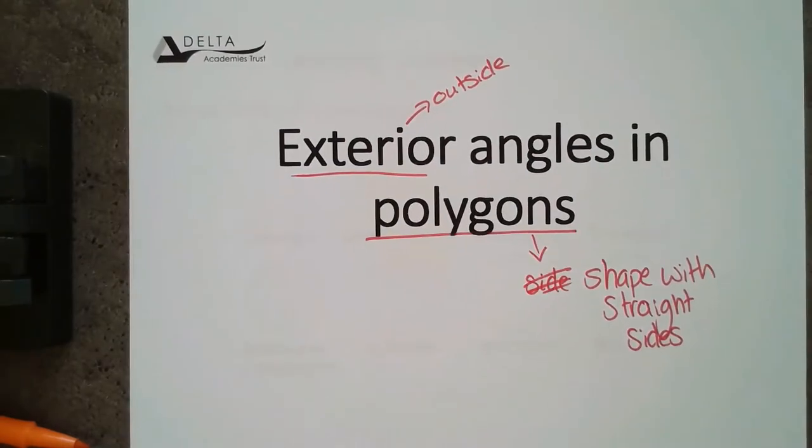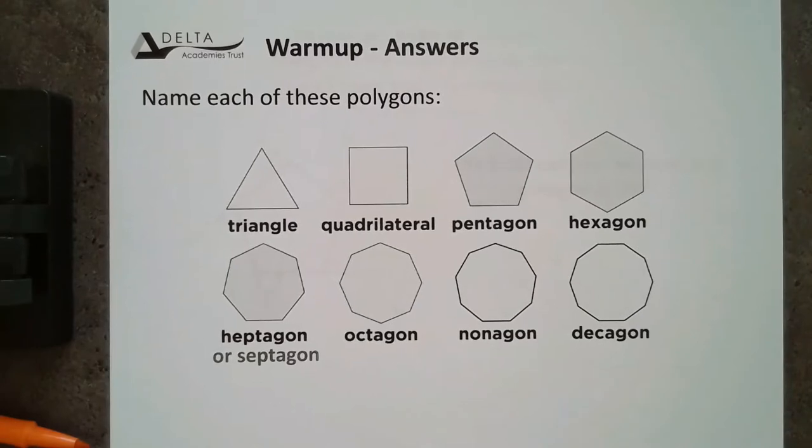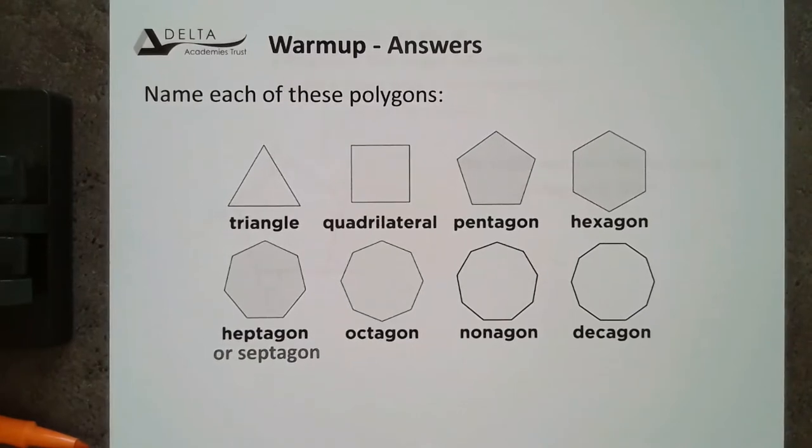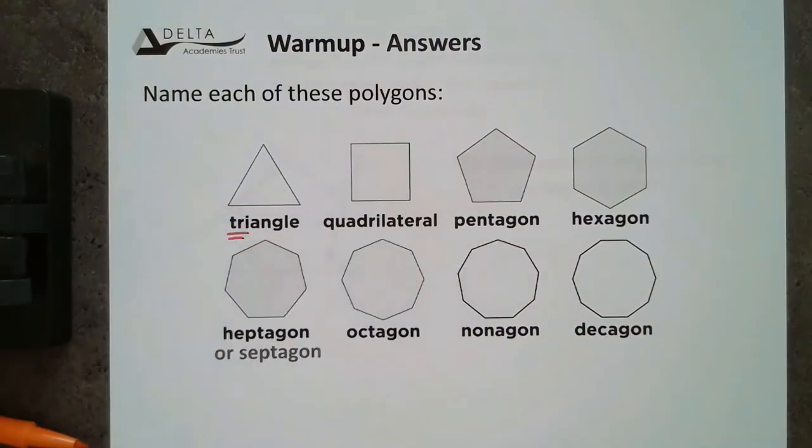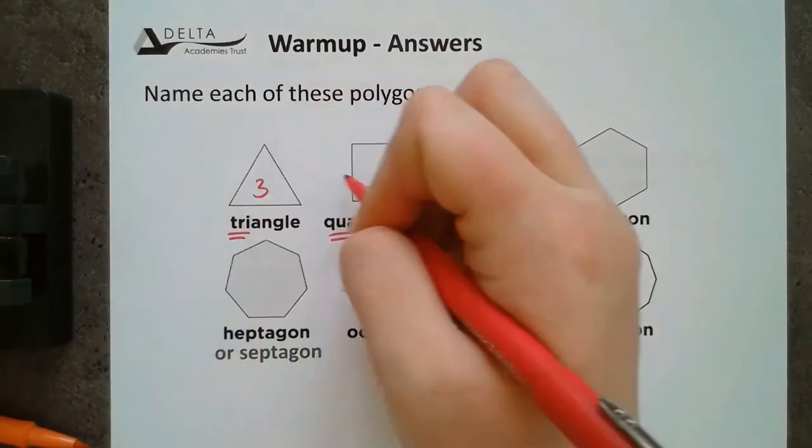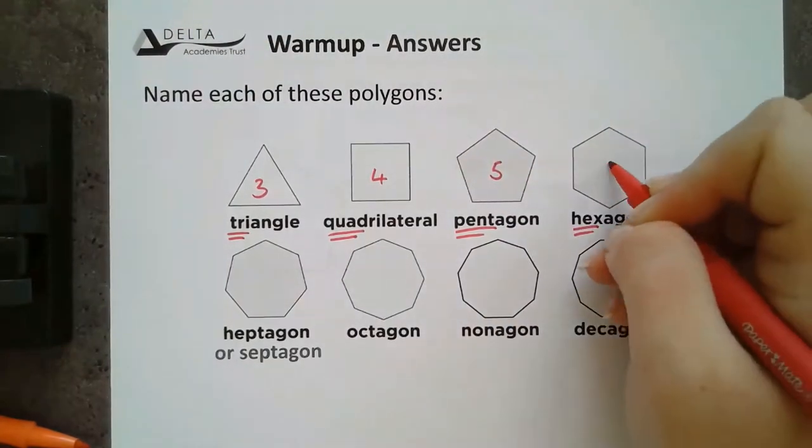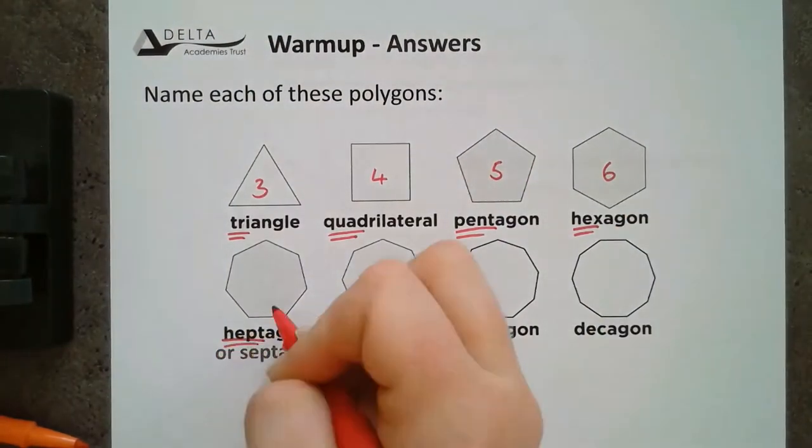Ok, so the answers for these should look something like this. We've got a triangle where that tri means 3, quad meaning 4, pent meaning 5, and hex for 6.